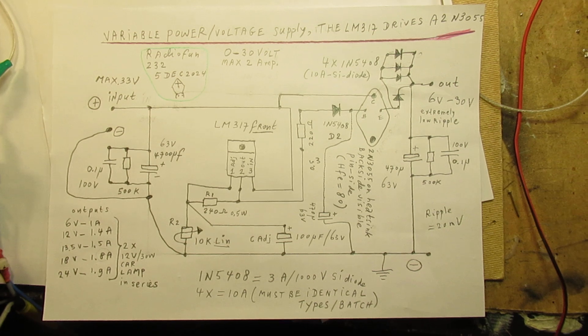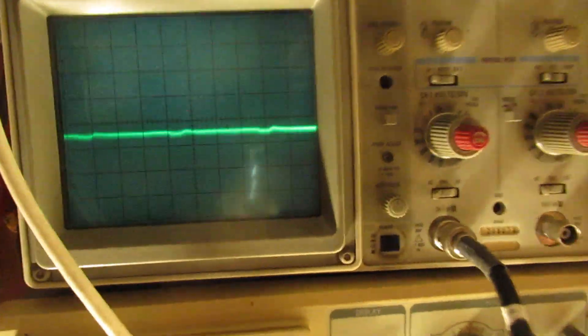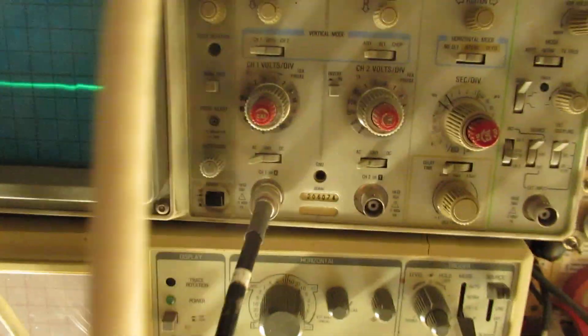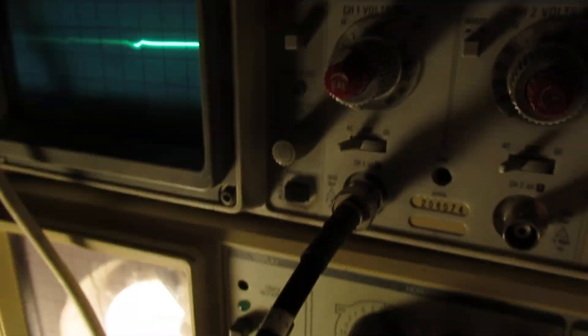Because the ripple that it makes is tiny. It's 20 millivolts. That's the output ripple. I can show it here on the scope.